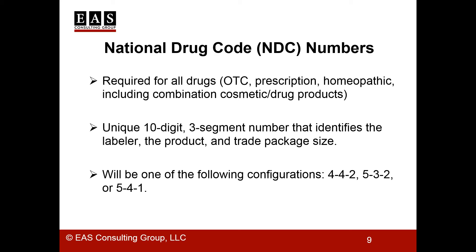Now your facility is registered and you're thinking about your product line — what's next? All drug products are required to have a National Drug Code, or NDC, whether they're over-the-counter, prescription, or homeopathic. This even includes combination cosmetic drug products like sunscreens. The NDC is a unique ten-digit, three-segment number that identifies the labeler, the product, and the package size. It will be in one of the following configurations: 4-4-2, 5-3-2, or 5-4-1.